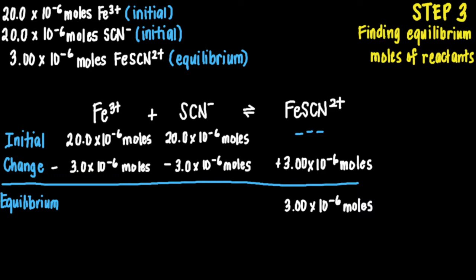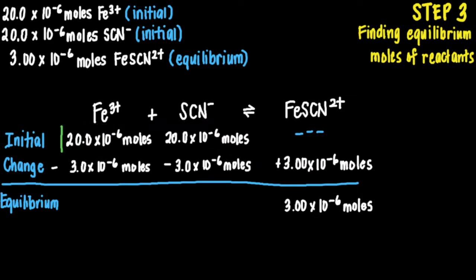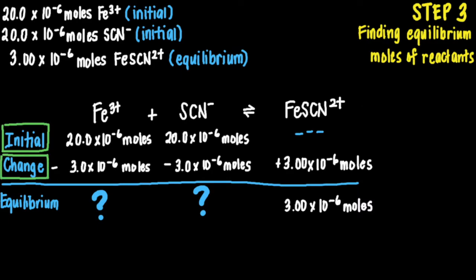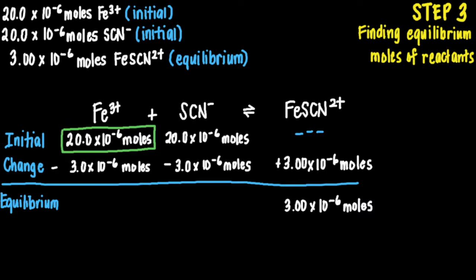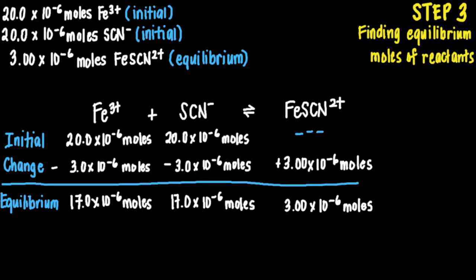Remember, in Step 1 we only got the initial moles. So we have the initial moles from Step 1 and the amount consumed from Step 2. The moles at equilibrium equal the moles we started with minus the moles reacted. For iron-3-ion: 20×10⁻⁶ moles minus 3×10⁻⁶ moles gives 17×10⁻⁶ moles. For thiocyanate ion: 20×10⁻⁶ moles minus 3×10⁻⁶ moles also gives 17×10⁻⁶ moles.